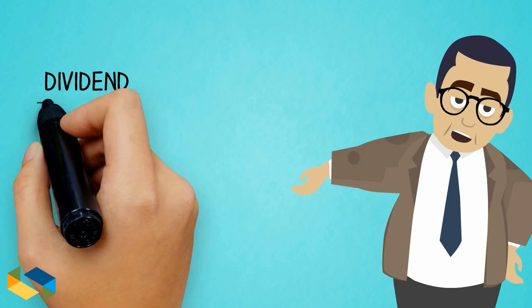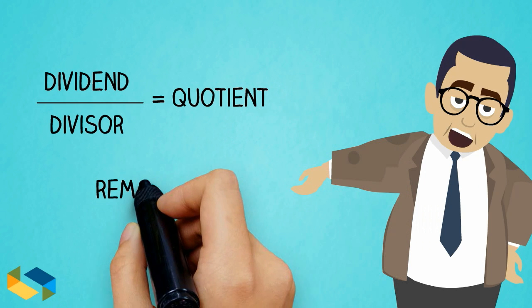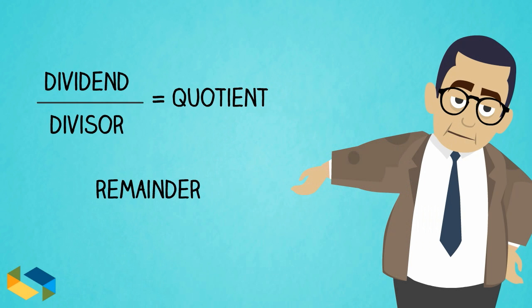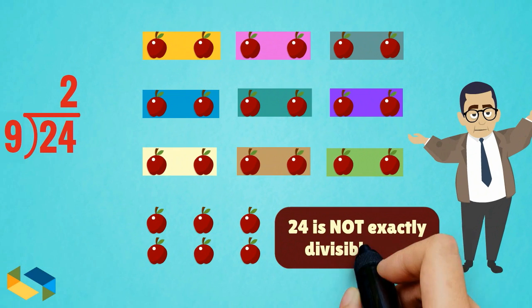So, if we divide a number by another number to get equal parts, but also get some leftovers, the number is said to be not divisible. In our example, 24 is not divisible by 9.